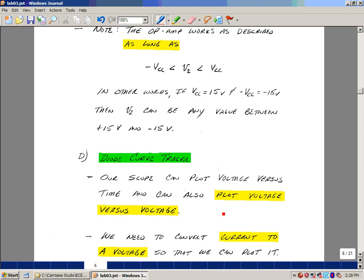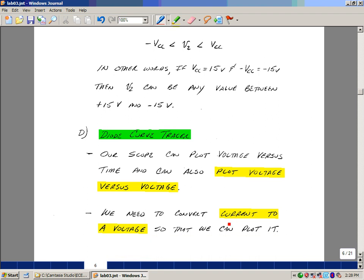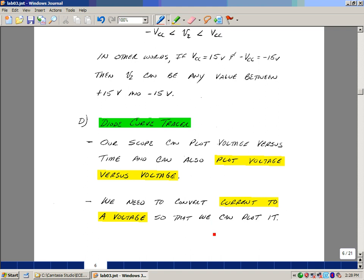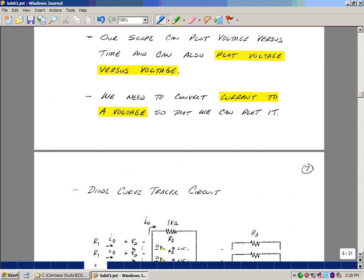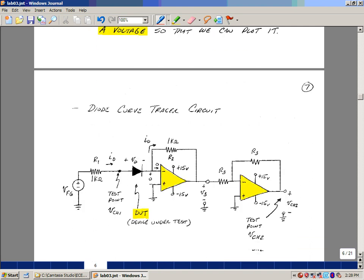In the past labs, we saw that the oscilloscope can plot voltage versus time, but it can also plot voltage versus voltage. What I need to do is find some way to convert the current through the element I want to graph into a voltage. We can actually use this last circuit, in a sense, to do that.